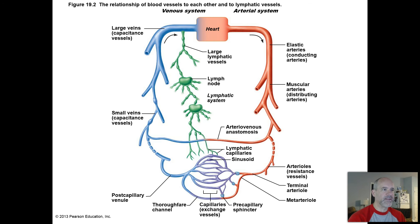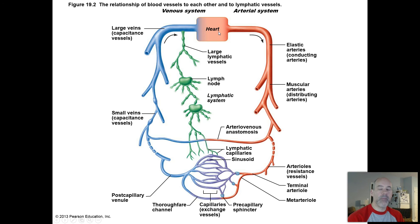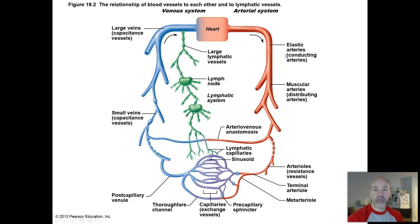I'm backing up here to the last figure from the first lecture for chapter 19. Looking over here at our arteries, which carry blood away from the heart — whether you're in the pulmonary circulation or in the systemic circulation — the largest arteries in the systemic circulation are called elastic arteries. As the name suggests, they have a lot of elastic tissue inside the walls with lots of elastic fibers that help them rebound shape.